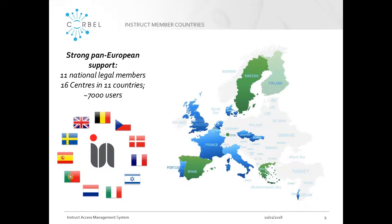This map shows the current member countries of Instruct. We currently have 11 national governments who have signed up. Blue represents current member countries; green represents countries in negotiation to join, including Spain, Germany, and Finland — so we're fully expecting that to grow. Instruct has a five-year funding commitment with each of those country governments, so it's pretty securely funded. There's also the Instruct Ultra project, a Horizon 2020 project due to kick off in February, developed to extend the reach and remit of Instruct — expanding membership, widening the user base to new European and international communities, and improving efficiency and scalability.